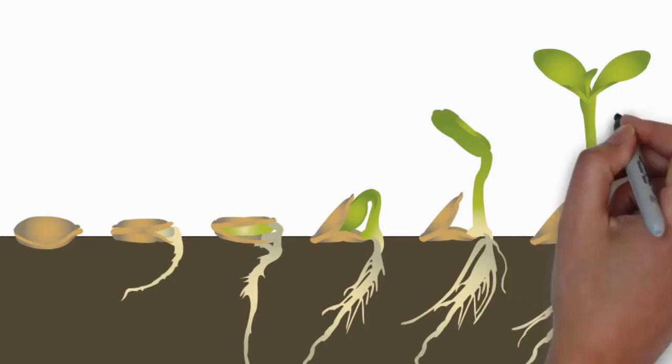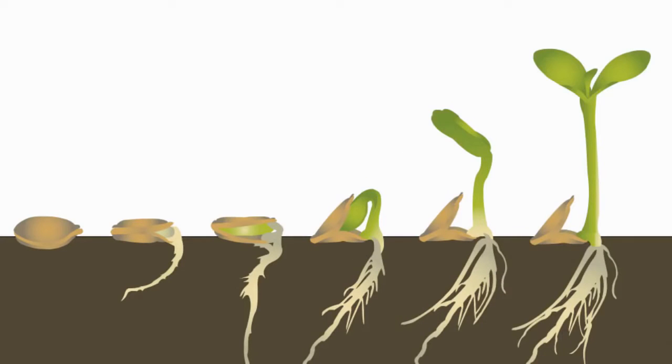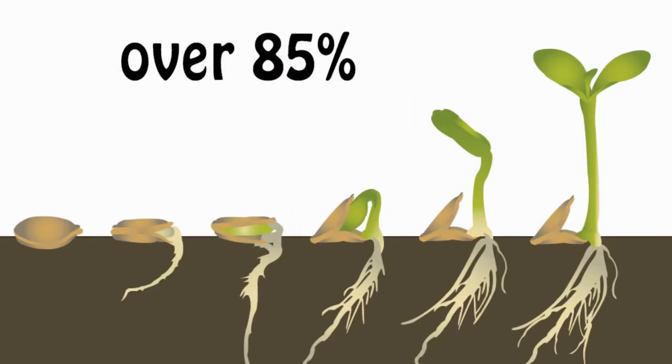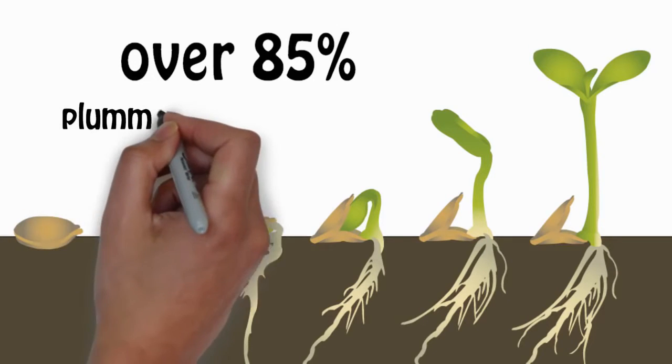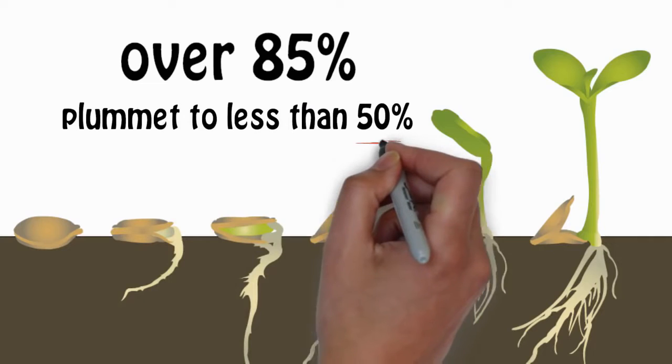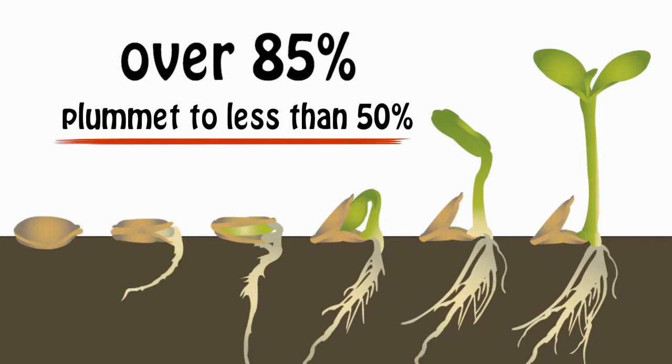If healthy seeds are planted within this time frame, most seed varieties will typically have germination rates over 85%. If these seeds are improperly stored for an additional year before planting, germination rates can plummet to less than 50%.